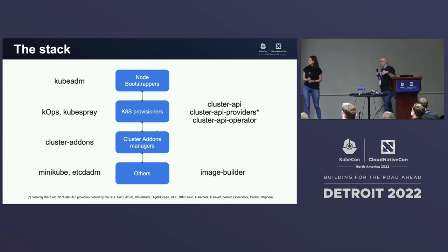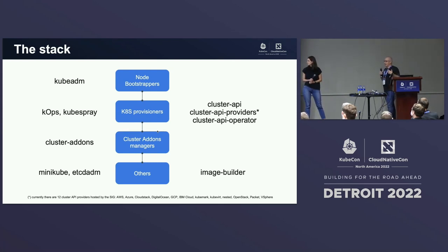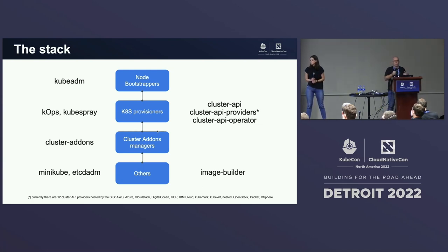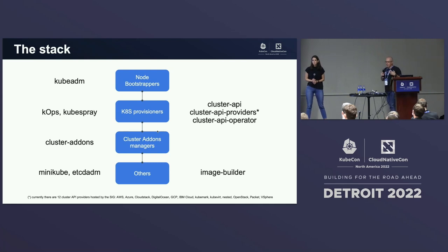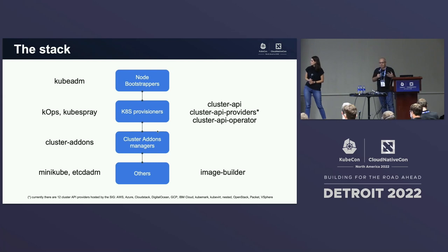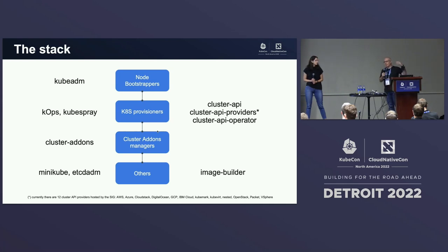The third set of tools is cluster add-on managers. When you have your cluster, you need add-ons like CPI, CNI, and CSI to get it running, and this set of tools tries to solve that family of problems. The last family is a mixed group — tools like KinD that provide a simple cluster for developer experience, or tools like etcd-ADM and Image Builder, which support the implementation of other tools.